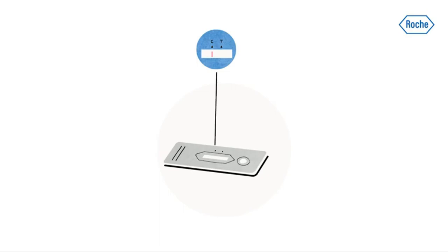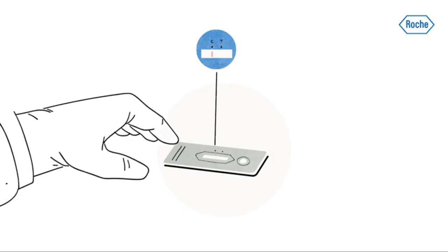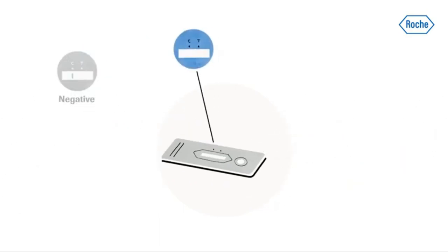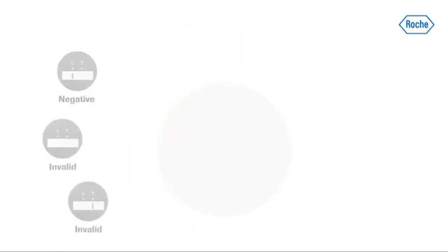If the control line C is the only visible line, the test is negative. If no control line C is visible, the result is always invalid and the test should be repeated using a new device.